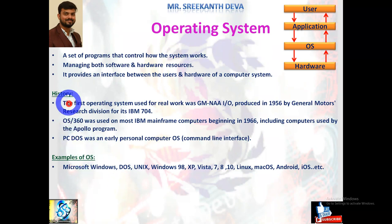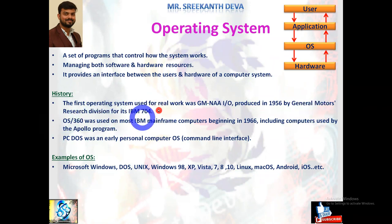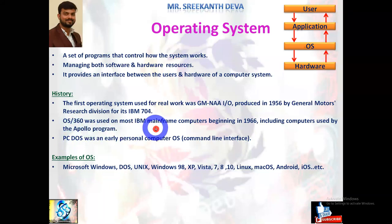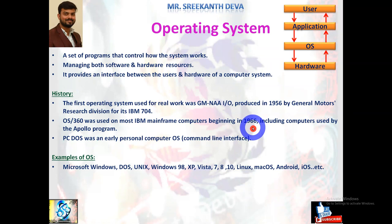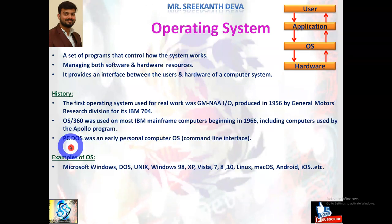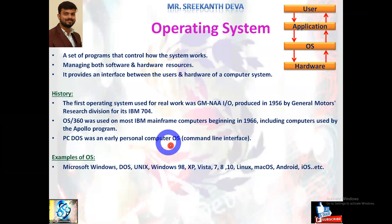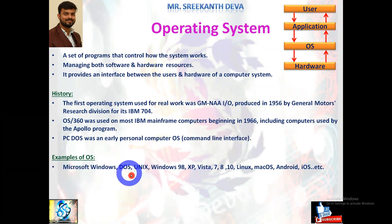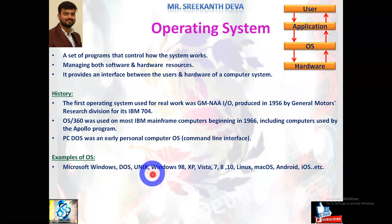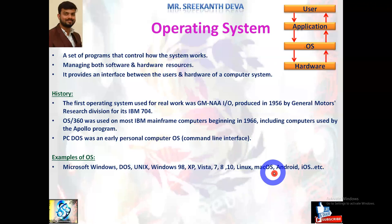Coming to history, the first operating system used for real work was GM-NAA I/O, produced in 1956 by General Motors Research Division for its IBM 704 machines. OS/360 was used on most IBM mainframe computers in 1966, including computers used by the Apollo program. PC-DOS was an early personal computer operating system with command line interfaces. Some examples include Microsoft Windows, Disk Operating System, Unix, Windows versions 1 through 98, XP, Vista, 7, 8, 10, Linux-based OS, Mac OS, Android, and iOS.